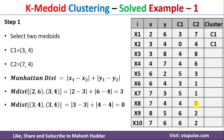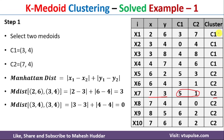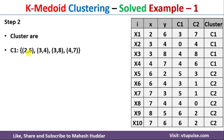This assignment is repeated for each data point. For example, for data point (7,3), comparing distances 5 and 1, since 1 is smaller and corresponds to C2, we assign (7,3) to C2. After completing all assignments, the first, second, third, and fourth data points belong to cluster C1, and the remaining six data points belong to cluster C2.